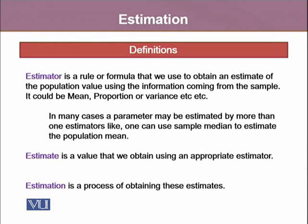An estimator is a rule or formula that we use to obtain an estimate of the population using the information coming from the sample. It could be the mean, proportion, or variance, and one can use other estimators as well. In many cases, a parameter may be estimated by more than one estimator — for example, one can use the sample median to estimate the population mean. The estimate is the specific numeric value that we obtain after using an appropriate estimator.